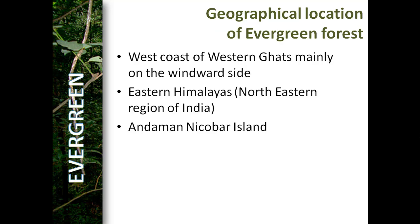The geographical locations of evergreen forest are mainly on the west coast of the Western Ghats, on the windward side. This region receives very strong southwest monsoon winds, and due to this heavy rainfall a thick evergreen forest exists on the windward side. Next is the eastern Himalayas, comprising mainly the northeastern states — the Seven Sisters — which receive heavy rainfall from southwest monsoon winds from the Bay of Bengal, resulting in very thick evergreen forest. Andaman and Nicobar Islands also have thick evergreen forest.